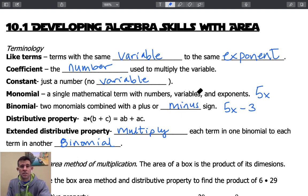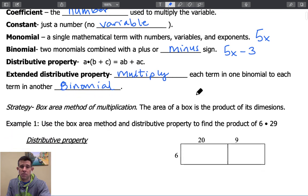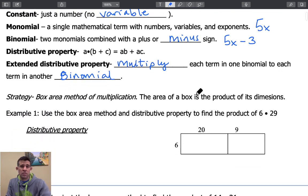Our first strategy that we're going to talk about is this box area method of multiplication. Now this should look familiar to you. This is something that you guys did way back in early elementary school and middle school. To use the box area method, you're going to basically show this geometric representation of the distribution method.